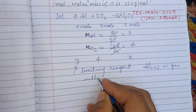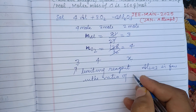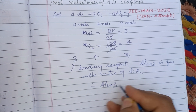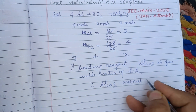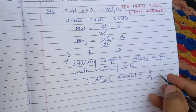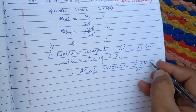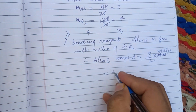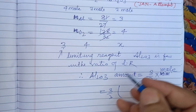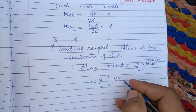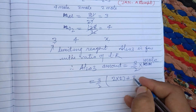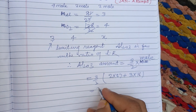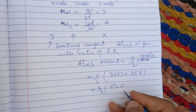The amount of Al₂O₃ formed is determined by the ratio of the limiting reagent. The moles of Al₂O₃ = 3/2 moles. The molecular mass of Al₂O₃ is 2×27 + 3×16 = 54 + 48 = 102 g/mol. So the mass = (3/2) × 102 = 153 grams.